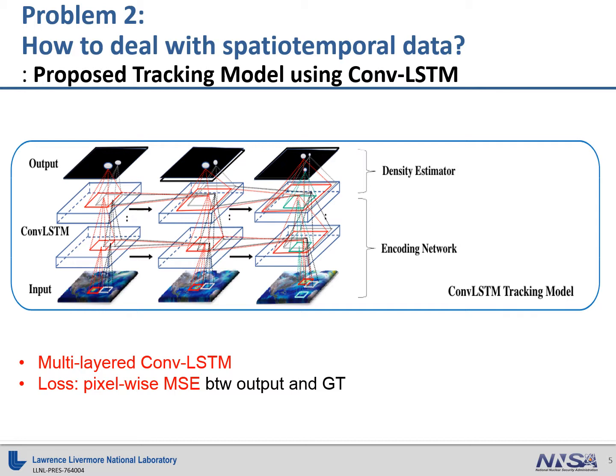This is our proposed ConvLSTM tracking model. At each time step, multi-layered convolutional LSTM generates density map of hurricane at corresponding time based on input and the hidden state taken from previous time step which have historical spatiotemporal information. We used multi-layered ConvLSTM model and pixel-wise MSE loss.